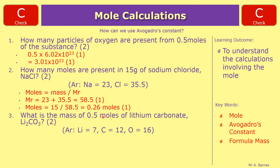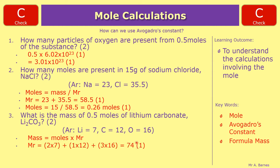Question 3: what is the mass of 0.5 moles of lithium carbonate Li₂CO₃? The equation is mass = moles times formula mass. Work out the Mr: 2 lithiums = 2 × 7, 1 carbon = 1 × 12, 3 oxygens = 3 × 16, which adds up to 74. That's your first mark. Then multiply by the number of moles: 0.5 × 74 = 37 grams, which is your second mark.